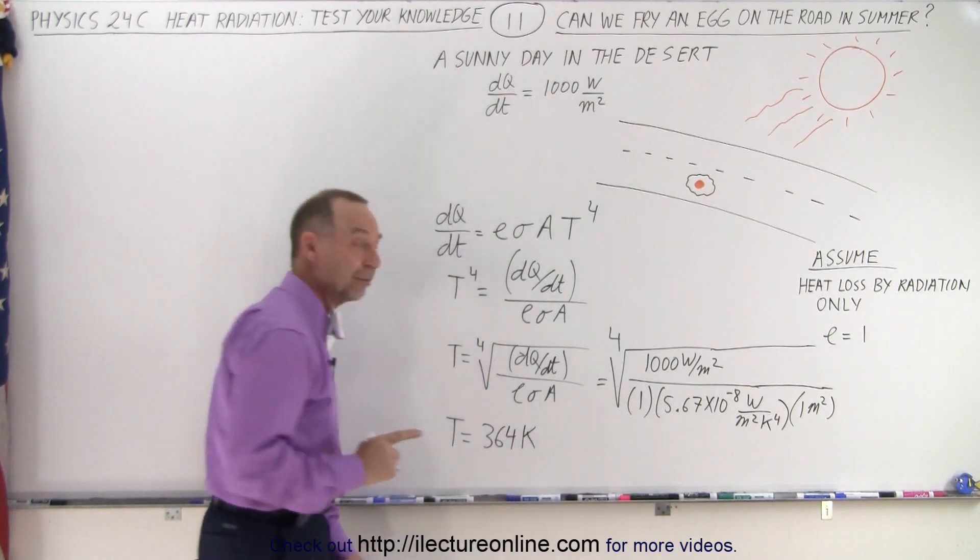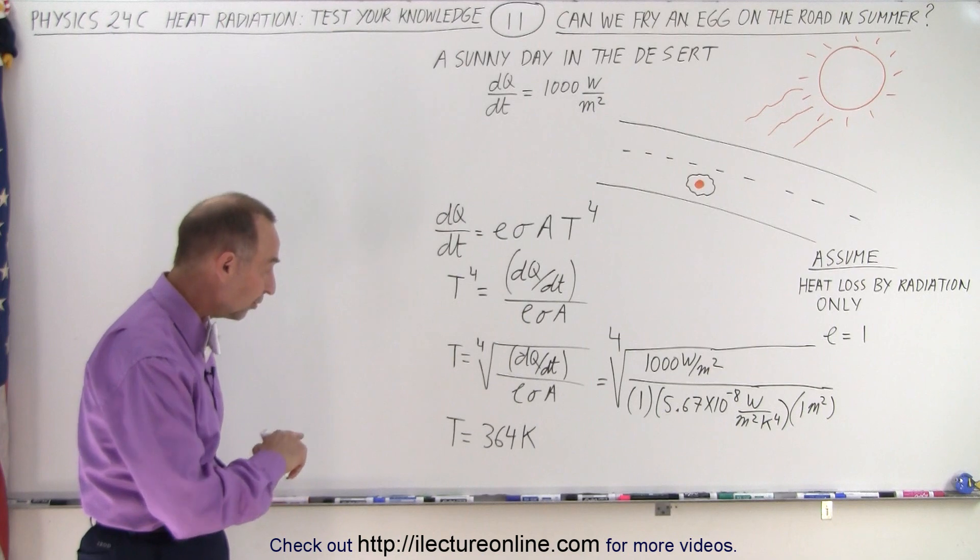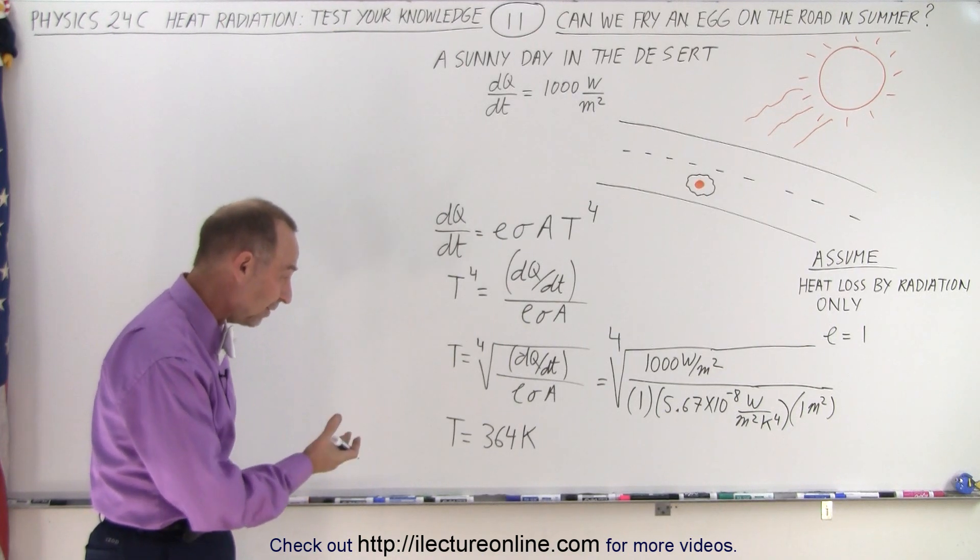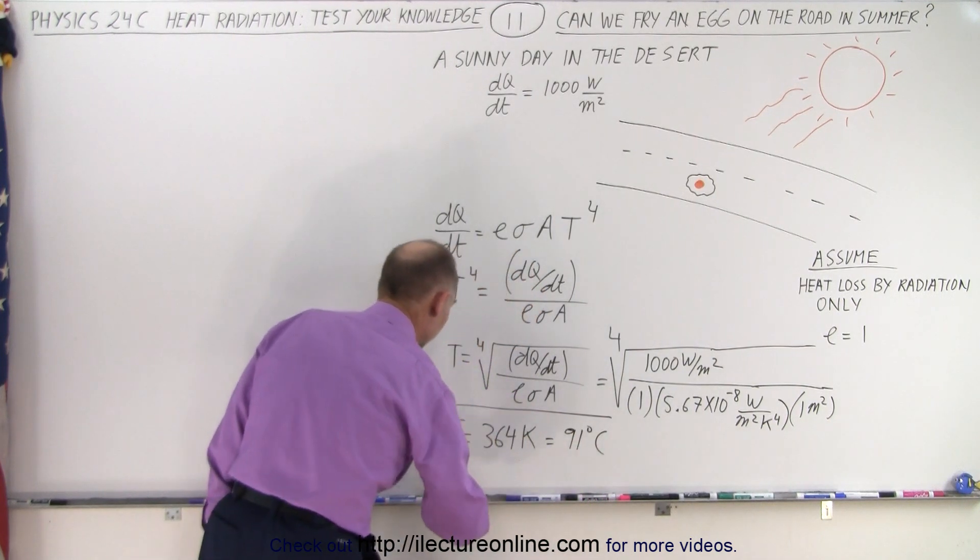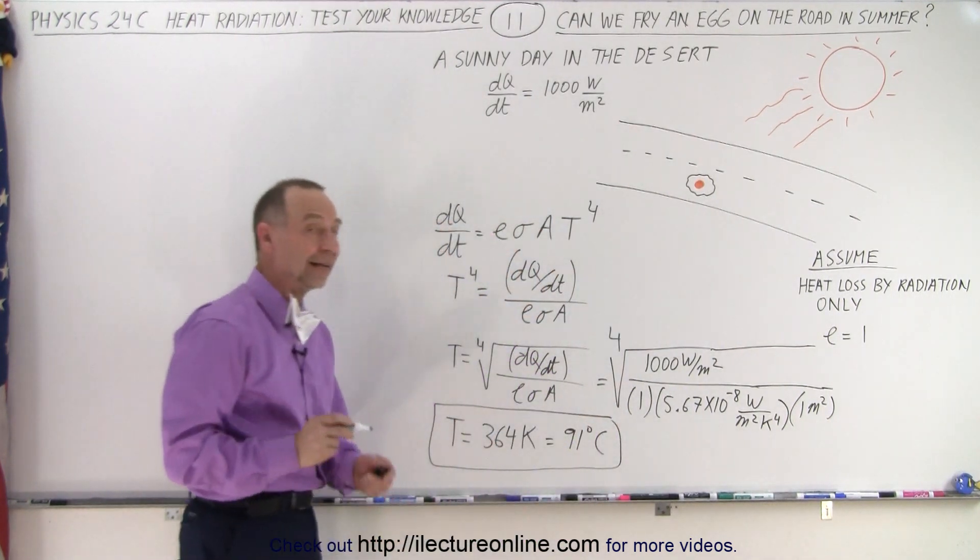364 Kelvin. Of course, if we then convert that to Celsius, we have to subtract 273. When we do that, this is equal to 91 degrees Celsius. All right, is that hot enough?